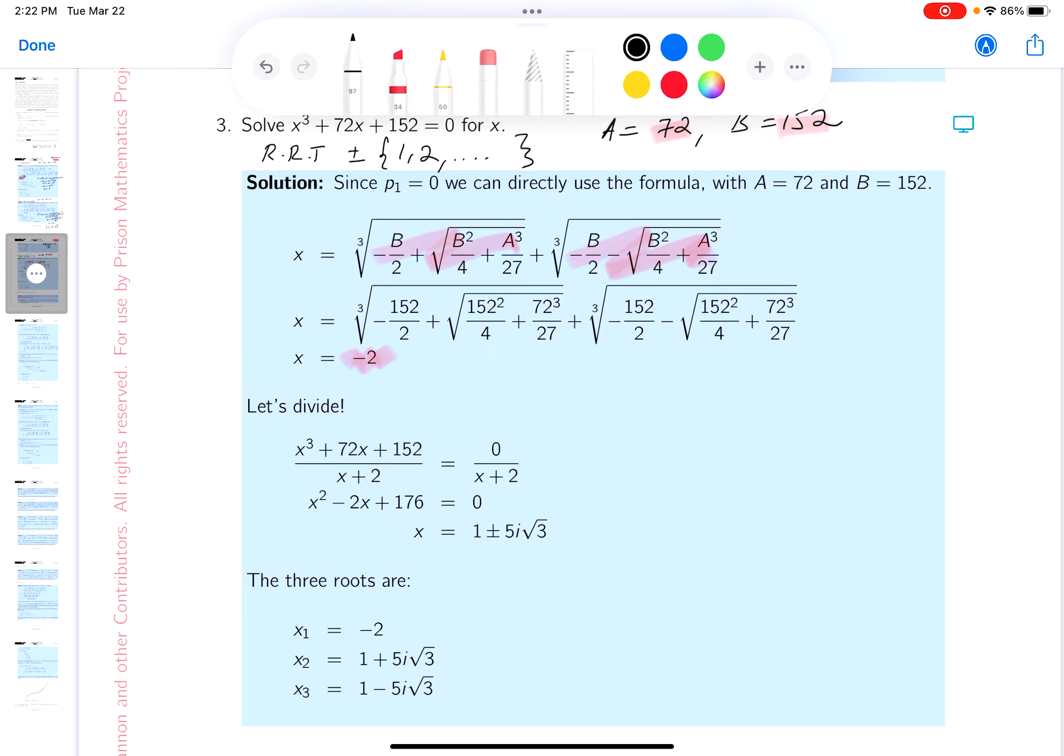So what do I know? I know x cubed plus 72x plus 152 is equal to x plus 2 times the quadratic x squared. Why x squared? Because x times x squared is x cubed. I don't know the middle term, but the ending term is going to be what? Let's see, 76, right? I know there's an error in my key, by the way, but I'll take care of that later.